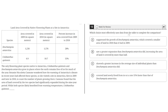Which choice most effectively uses data from the table to complete the comparison? The only flowering plant species native to Antarctica, Columbanthus quercensis and Descampsia Antarctica, grow in places where the earth remains free of ice for much of the year. Botanist Nicolometa Canone wondered how the warming of Antarctica's climate in recent years had affected these species, so she visited a site in Antarctica, first in 2009 and later in 2018, to count the number of plants growing there.